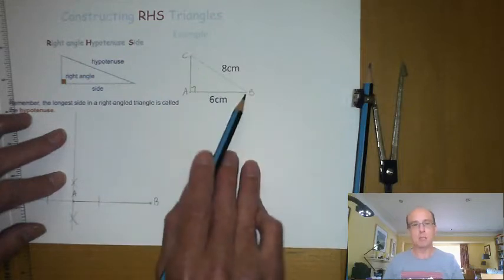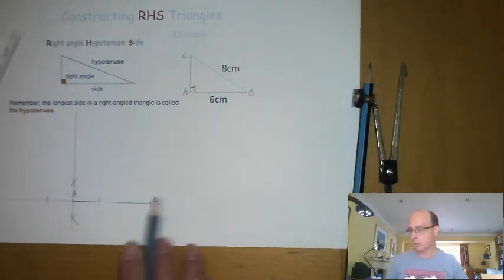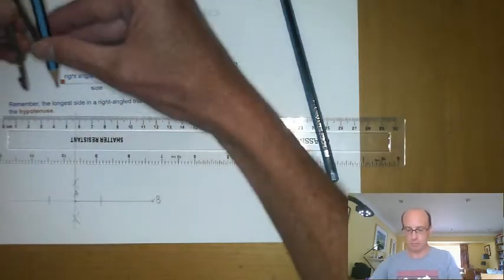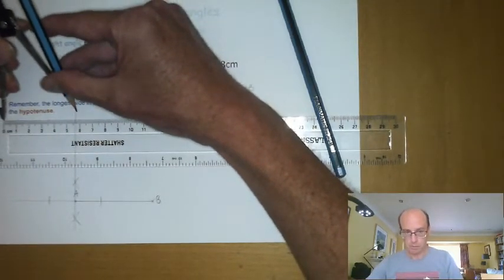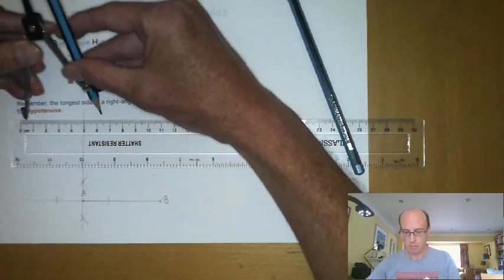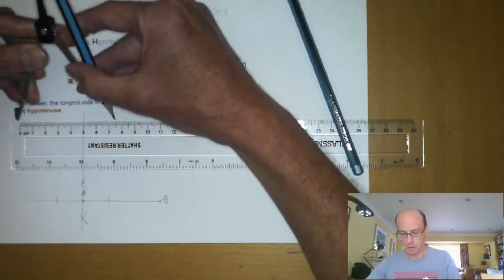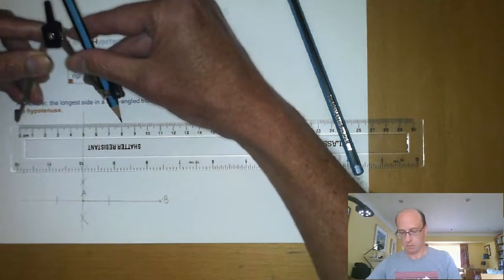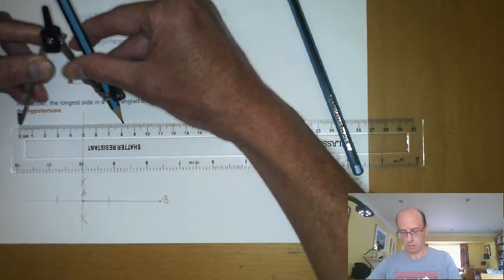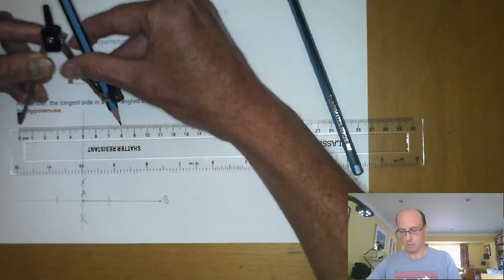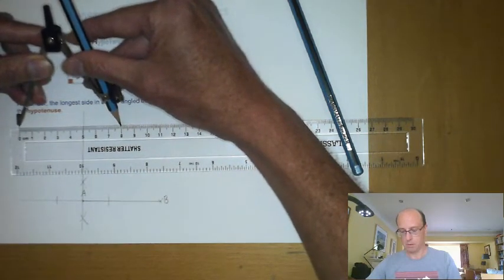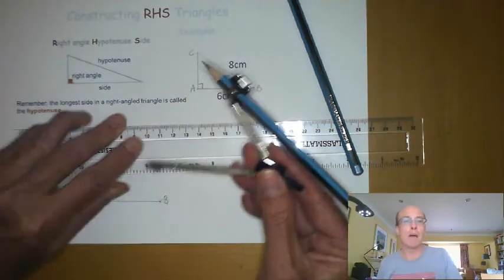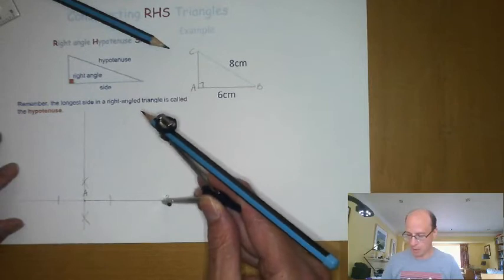I know that it's eight centimeters away from B. So I go back to my compass, and I set it to eight centimeters. I'm going to put the compass on the point B and draw an arc.